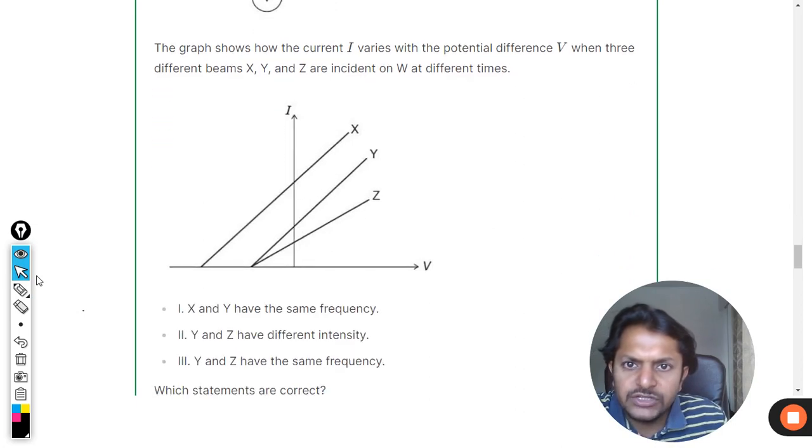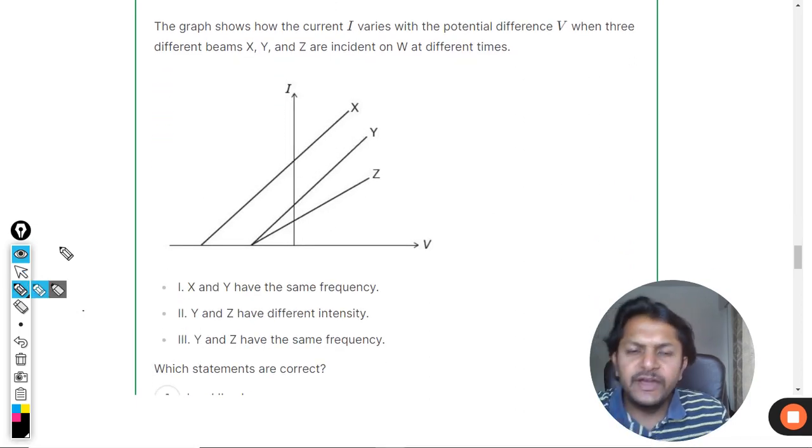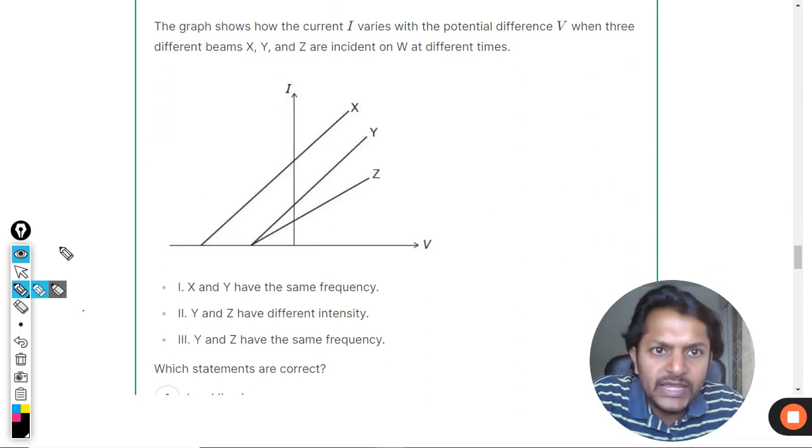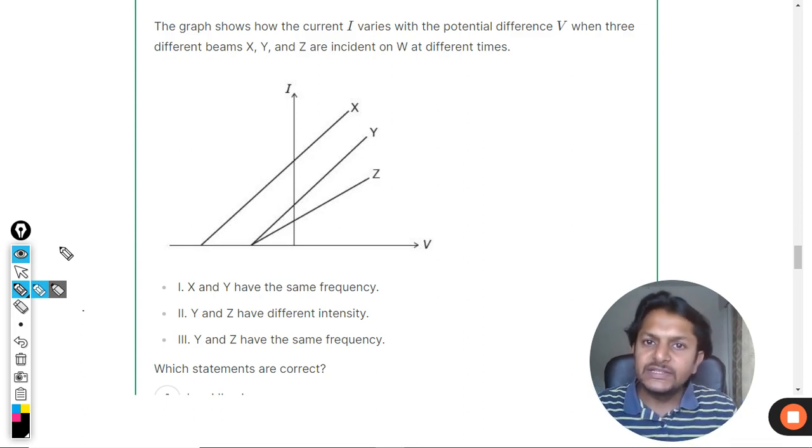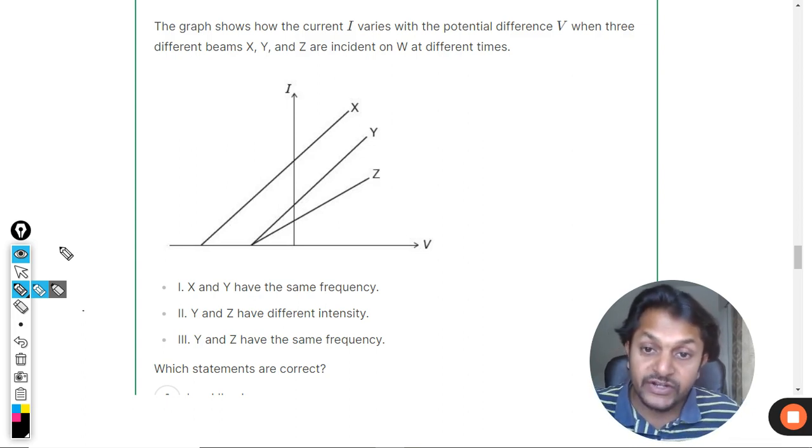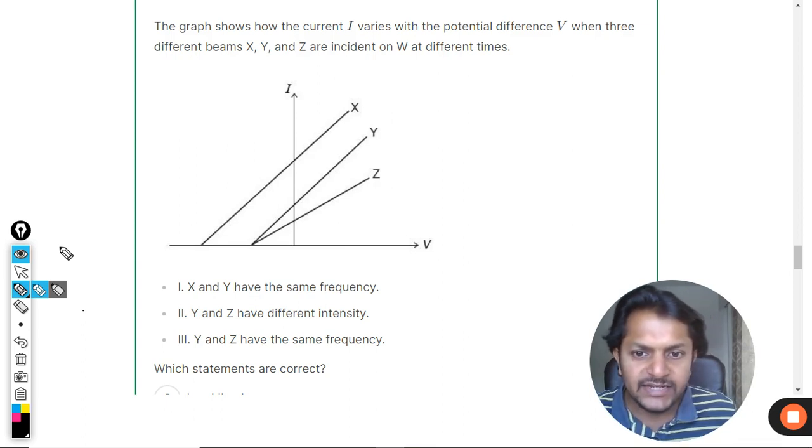The graph shows the current I as it varies with the potential difference V when three different beams X, Y, Z are incident on W at different times. X and Y have the same frequency, Y and Z have different intensity.